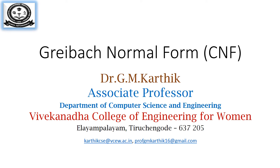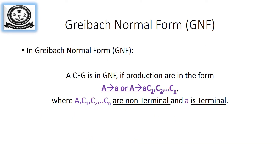Today we will be looking at Greibach Normal Form, referred to as GNF. All productions must be of the form A → a or A → a C1 C2 ... Cn, where capital A and C1, C2, ..., Cn are non-terminals (variables) and small letter a is a terminal symbol. So the right-hand side must have either a single terminal symbol or a single terminal symbol followed by non-terminal symbols.